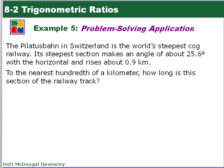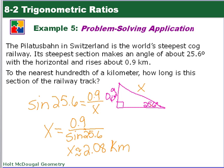So here we have the Pilatusbahn in Switzerland, the world's steepest railway. Its steepest section makes an angle about 25.6 degrees with the horizontal and rises about 0.9 kilometers. To the nearest hundredth of a kilometer, how long is this section of the railway track? Well, let's sketch a picture. So here's a picture. We have—I just started with a right triangle. We're told the angle formed at the horizontal is 25.6, so that angle is down here. The height, the rise, is 0.9, which came up from there. So we're trying to find the hypotenuse. At the angle here, information we're given—we're giving the leg opposite the angle, and we have to find the hypotenuse. That's where sine is going to be opposite over hypotenuse. Solving for x, it's going to be 0.9 divided by sine of 25.6. So put this into your calculator all at once. And then rounding to the nearest hundredth of a kilometer, the length is about 2.08 kilometers.